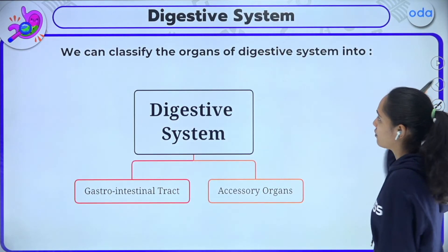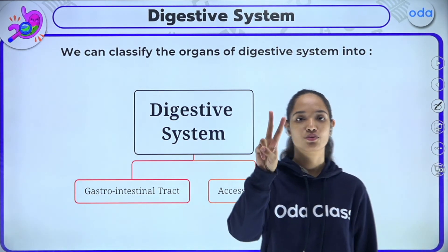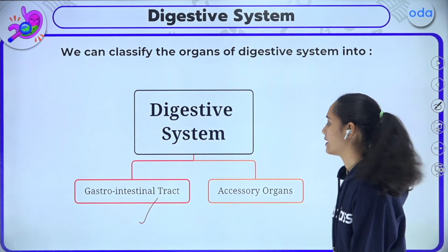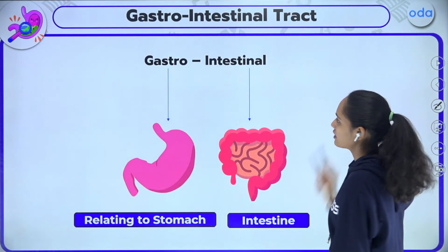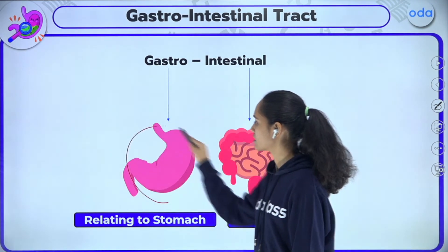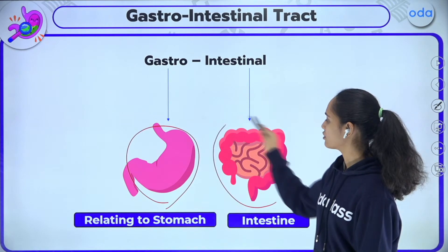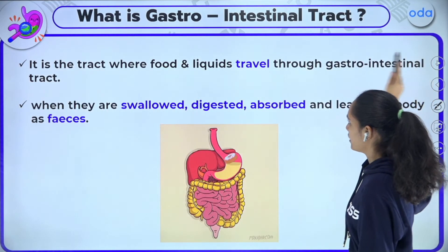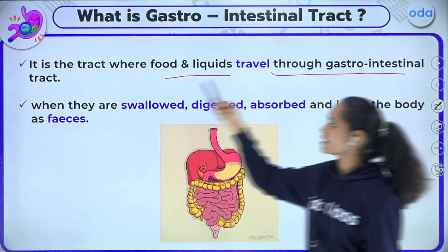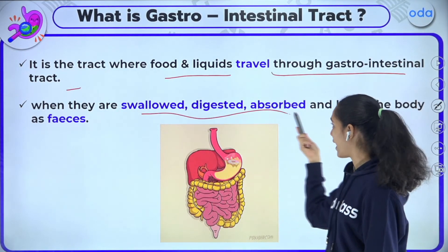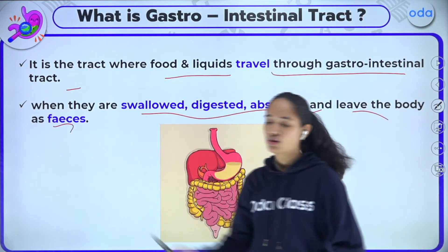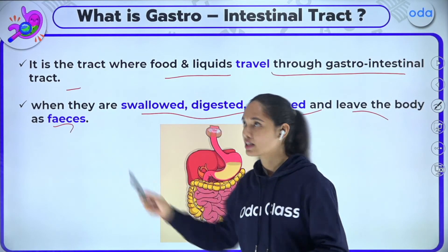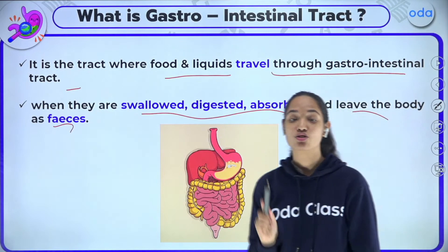We can also classify the digestive system organs into two categories: the gastrointestinal tract and accessory organs. 'Gastro' means relating to the stomach, and 'intestinal' means relating to the intestine. So the gastrointestinal tract is the path related to the stomach and intestine — it is the tract where food and liquids travel when they are swallowed, digested, absorbed, and leave the body as feces.